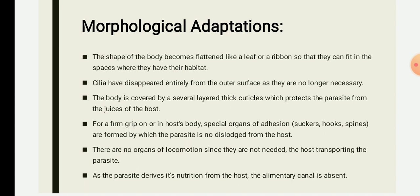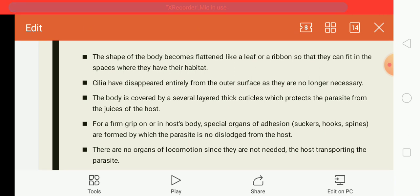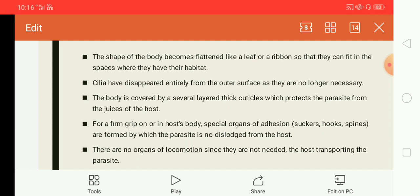Morphological adaptations can again be of two types: there will be either modification or degeneration of a particular character, or the gaining of a new character. In degeneration, what happens is that it particularly involves the locomotory, digestive, and sensory organs. As the parasite lives on the digested or semi-digested food of the host, the organs of locomotion and alimentation have become simplified or reduced.